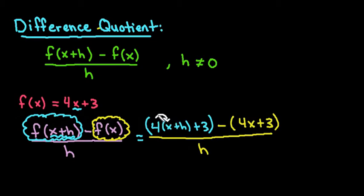So to simplify, I would take and plug 4 into both of these. So I end up with 4x+4h+3, and then we would distribute our negative into the second one.